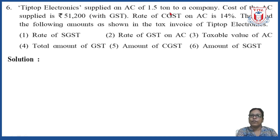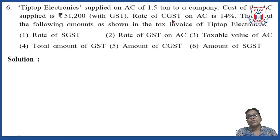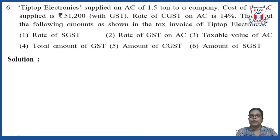Tip-Top Electronics supplied an AC of 1.5 ton to a company. The cost of the AC supplied is rupees 51,200 with GST — that means the total cost is taxable value plus GST. The rate of CGST on AC is 14%, which means the rate of GST is exactly double, that is 28%, because AC is a luxury item and therefore the rate of GST is highest at 28%.